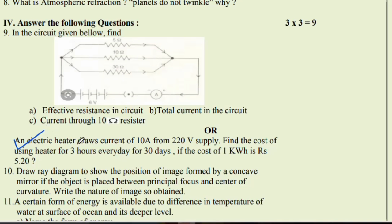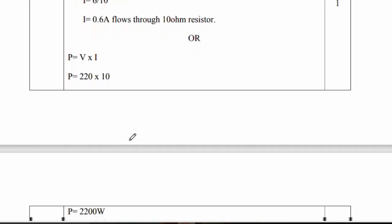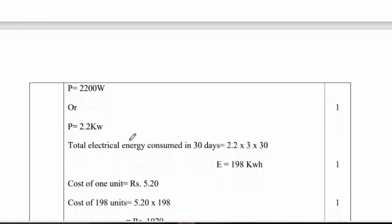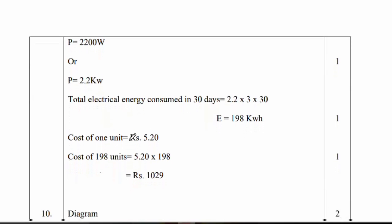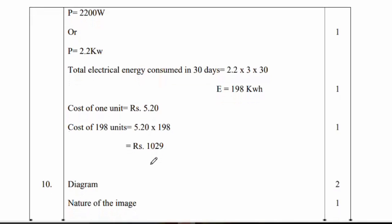An electric heater draws current of 10A from 220 volt supply. Find the cost of using heater for 3 hours every day for 30 days, if the cost of 1 kilowatt is Rs. 5.20. The cost of 1 unit is Rs. 5.20, so 198 unit is Rs. 1039.